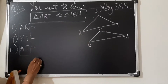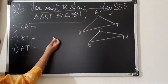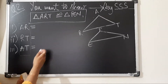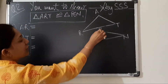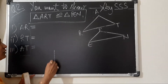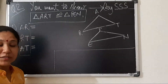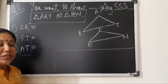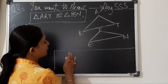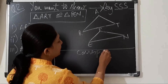You have to write down the three corresponding sides equal to those of triangle PEN. Now we will start with the very first step, which is matching the vertices — also called corresponding vertices.